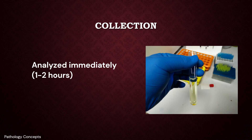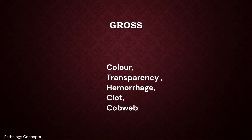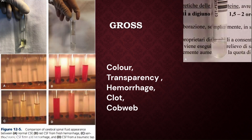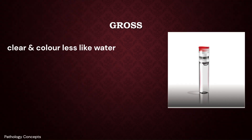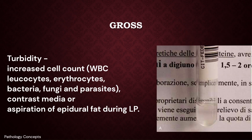Samples are transported to the lab in a biohazard bag without refrigeration. In gross examination, we check for color, transparency, hemorrhage, clot, and cobweb formation. Normal CSF is clear and colorless like water. CSF turbidity may be caused by increased cell count — WBCs, leukocytes, erythrocytes, bacteria, fungi, and parasites.